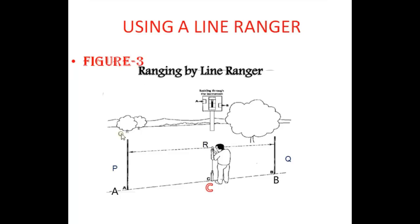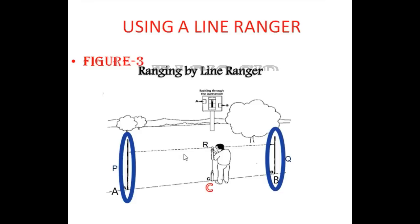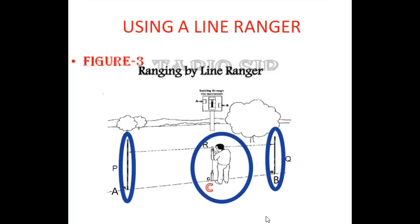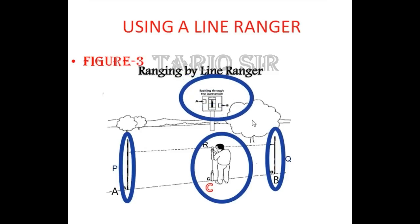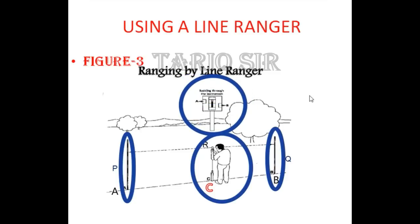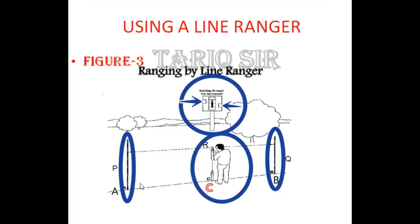As you can see in the figure, we have a ranging rod at point A and a ranging rod at point B. The surveyor stands at a location somewhere midway between A and B, or as required. This is the diagram being formed in the line ranger — you can see that there is a ray passing from one side and another ray coming from the other side. One comes from the A side and the other comes from the B side, meeting at point R.